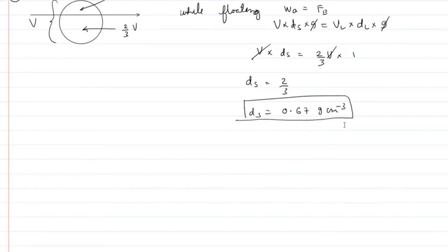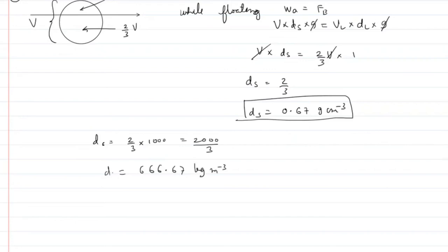To express this in SI units, density of solid equals two-thirds times 1000, which is 2000 divided by 3, giving 666.67 kg per meter cube. If the question doesn't specify, you can leave it at 0.67 gram per centimeter cube as well.